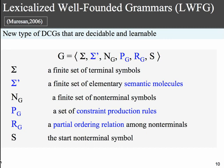For that reason, I introduce a new grammar formalism that I call Lexicalized Well-Founded Grammars. Like other grammars, they have a set of terminal symbols, non-terminal symbols, and start symbols. What I introduced specifically for Lexicalized Well-Founded Grammars is: a finite set of elementary semantic molecules, a set of constraint production rules, and a partial ordering relation among non-terminals. I'll explain why each of these is important.